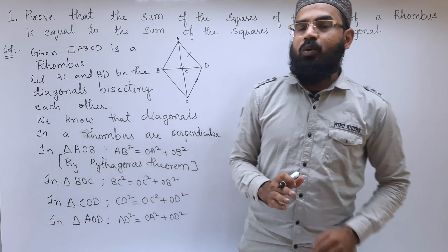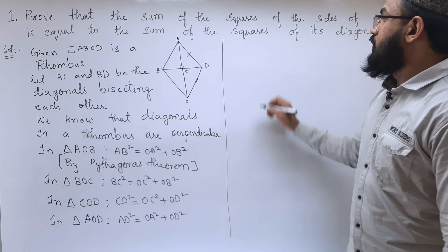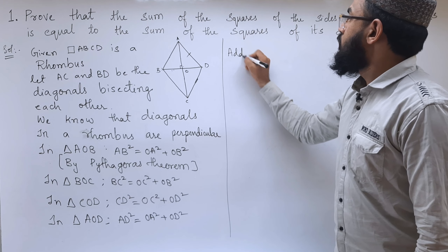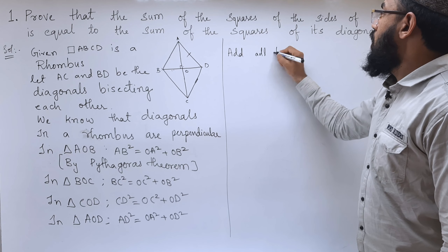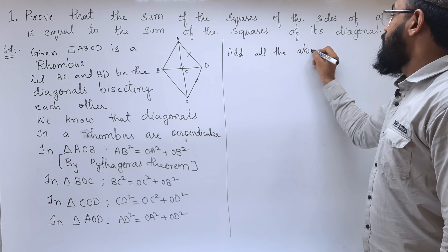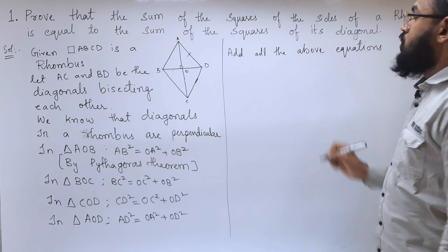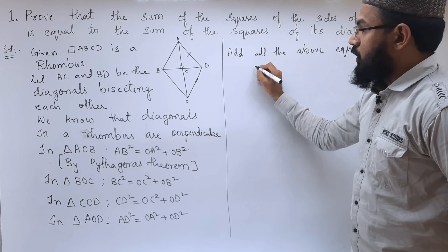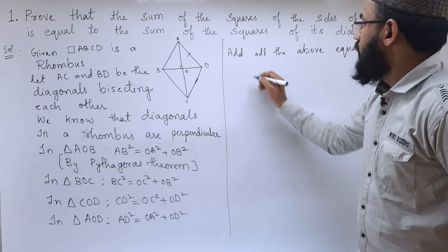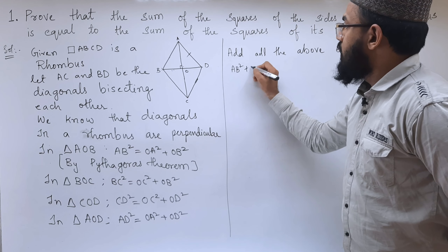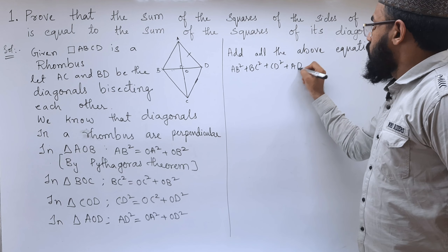Now we have four equations. Let us add all the above equations. So, if we add them, we get: AB² + BC² + CD² + AD² equals OA² + OB² + OC² + OB² + OC² + OD² + OA² + OD².